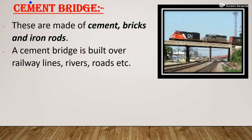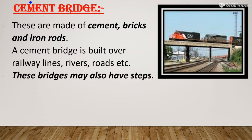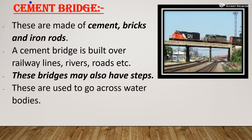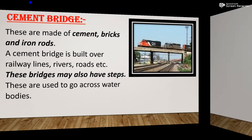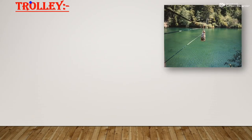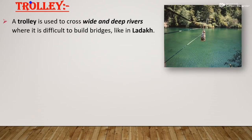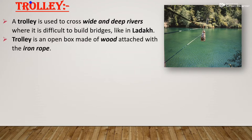A cement bridge is common and you can also find it in our area. It is made up of cement, bricks, and iron rods. A cement bridge is built over railway lines, rivers, and roads. It may also have stairs. These are used to go across water bodies like rivers.